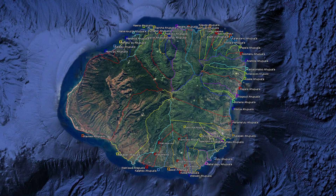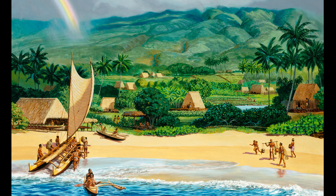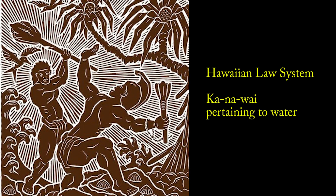In old Hawaii, each moku, or island, was divided into individual ahupua'a, which is a watershed or a valley. Every ahupua'a had a kanohiki who managed the aina for the moi — every valley or watershed had a chief who managed the valley for the king. The Hawaiian system of laws, or kanowai, literally means pertaining to water.